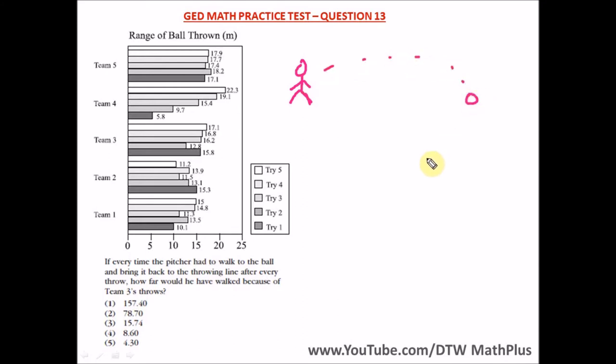The ball is here, and every time the pitcher had to walk to the ball and bring it back to the throwing line after every throw. So let's say this is the throwing line. It means after he has thrown the ball, he has to walk to the ball, pick it up, and come back to the throwing line.